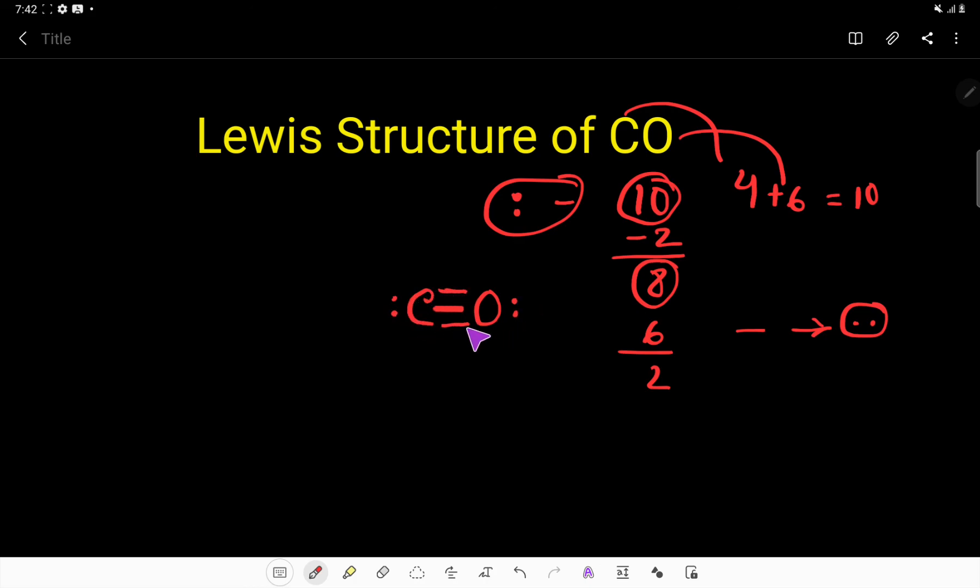and oxygen has 2, 4, 6, 8. So the octet for both carbon and oxygen is fulfilled. This is the Lewis structure of carbon monoxide. Thank you for watching this video. Be well.